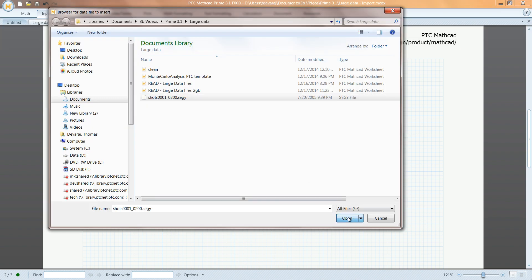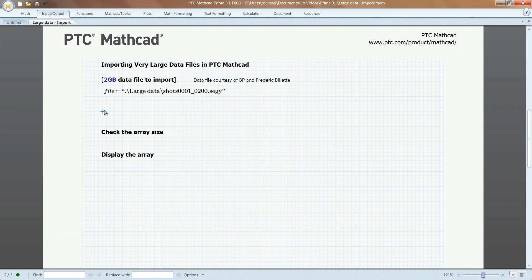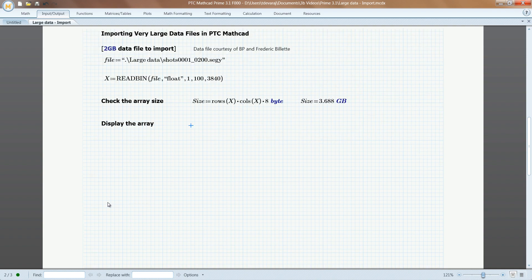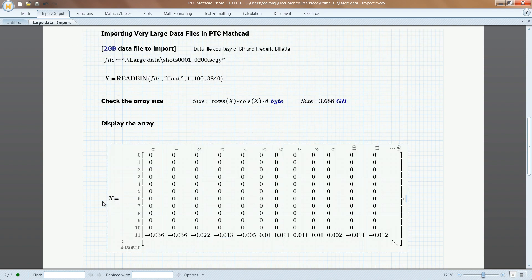PTC MathCAD Prime 3.1 provides even greater power for users working with large data sets. By making use of the latest in Microsoft technology and 64-bit architectures, data sets are no longer limited to 2GB of memory.